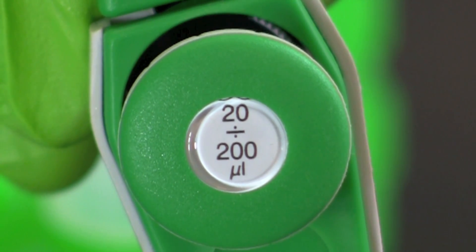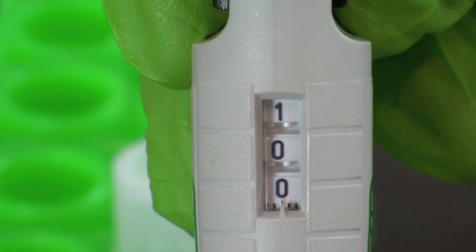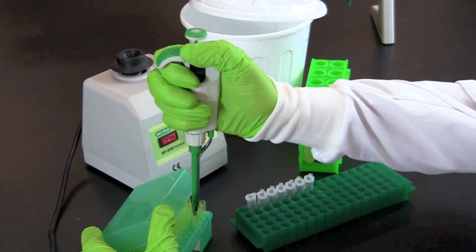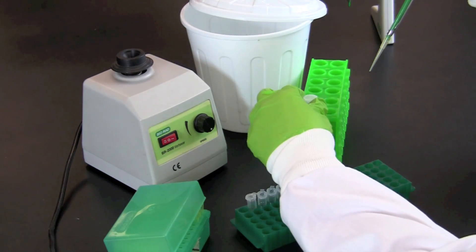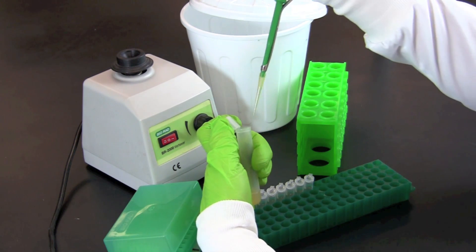Next, using a 20 to 200 microliter micropipette, set the volume to 100 microliters. Using aseptic technique, pipette 100 microliters of bacteria culture into the microcentrifuge tube labeled 10 to the 1st.